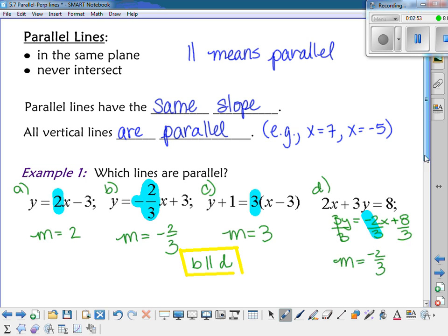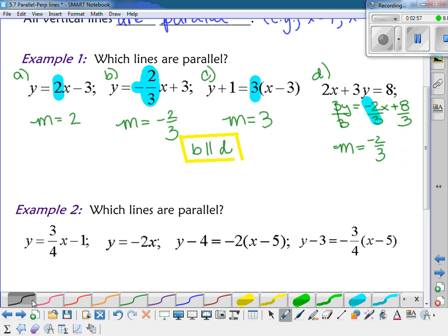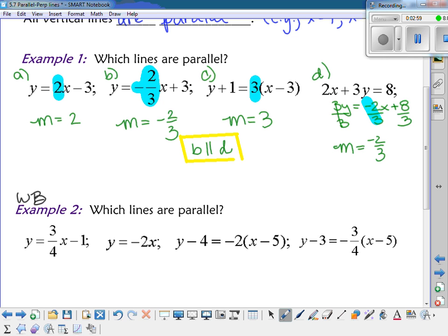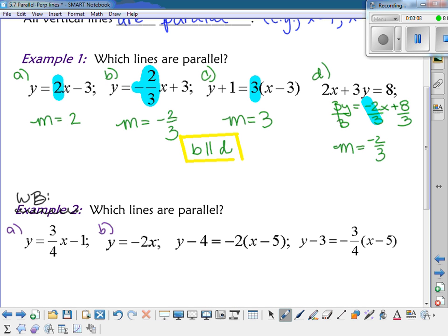Alright, so I'm going to have you do this next one on your whiteboards. No, you don't have to write any of it down. You're doing it on your whiteboards. So, we're going to do the same thing. I'm going to put an A, a B, a C, and a D. And you tell me which ones are parallel.